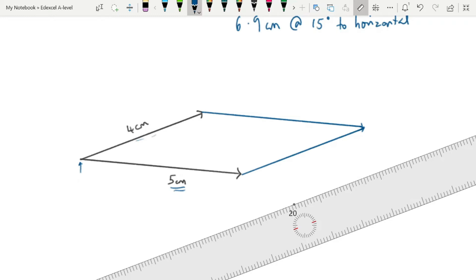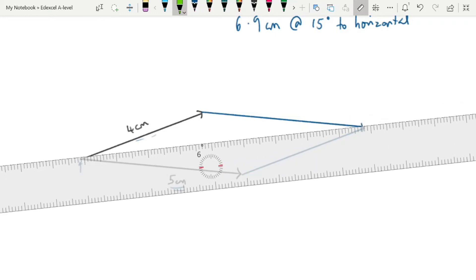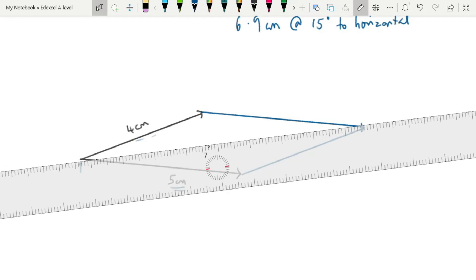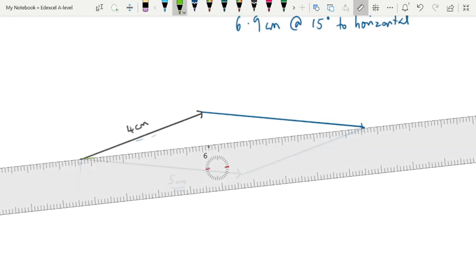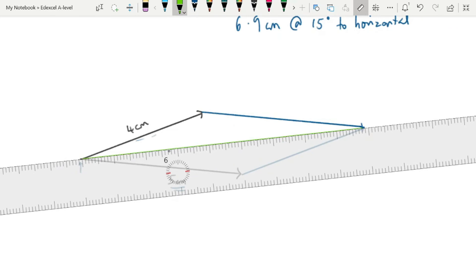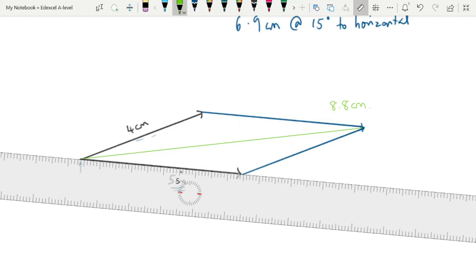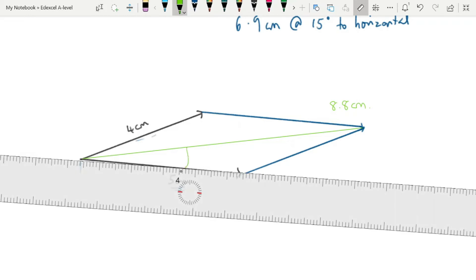To find the resultant of this vector, then, I simply join up the corners. And again, it might be quite tricky because of the resolution of this ruler, but I will do my best here. And I need to know the length of that. So starting at the corner, 1, 2, 3, 4, 5, 6, 7, 8, 0.8 cm. That's the magnitude of my resultant. For the angle of my resultant, I know this is at 6 degrees to the horizontal. My 5 cm vector was at 5 degrees to the horizontal, so the difference between that is going to be 11 degrees.